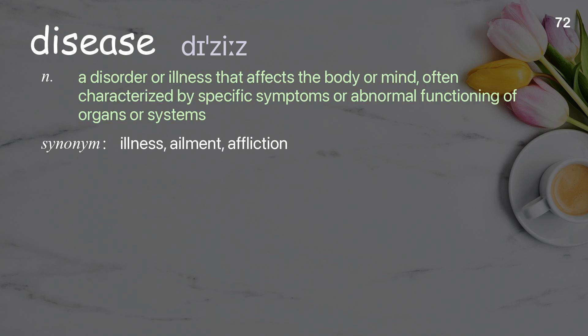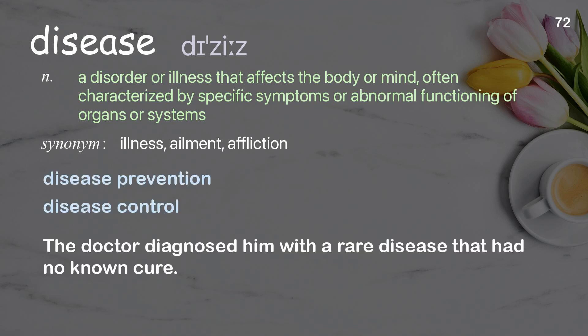Disease: a disorder or illness that affects the body or mind, often characterized by specific symptoms or abnormal functioning of organs or systems. Examples: disease prevention, disease control. The doctor diagnosed him with a rare disease that had no known cure.